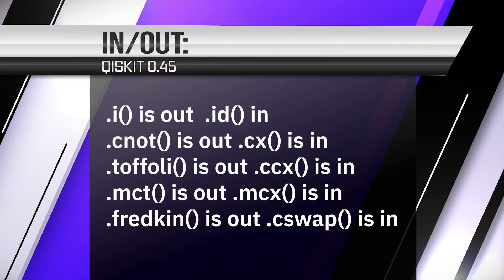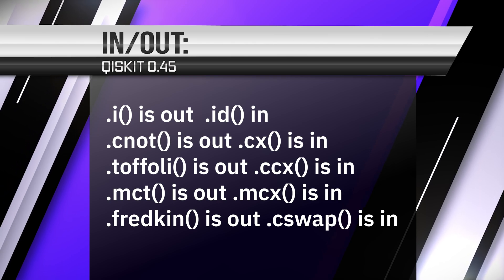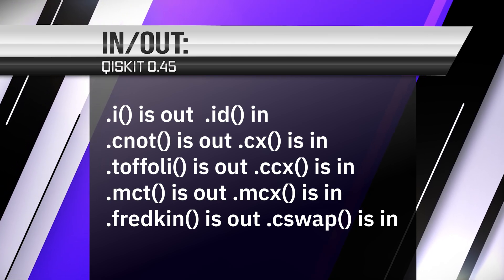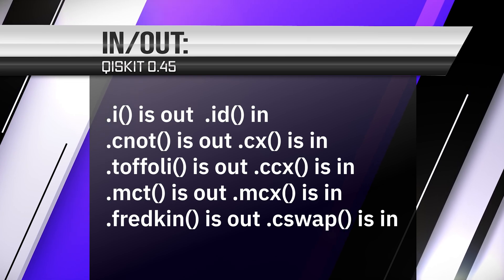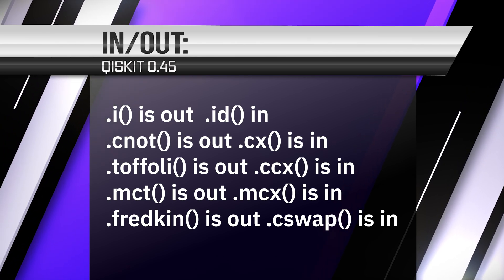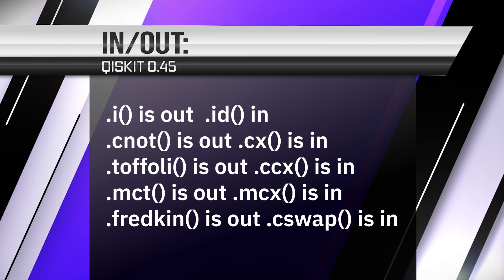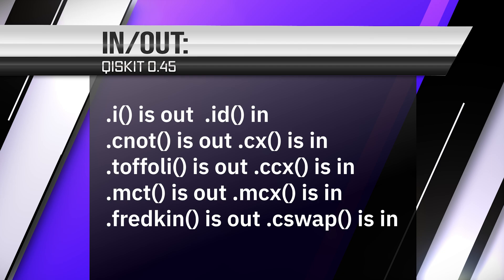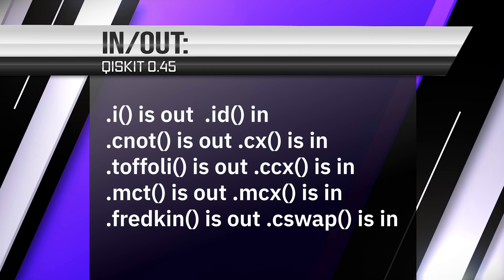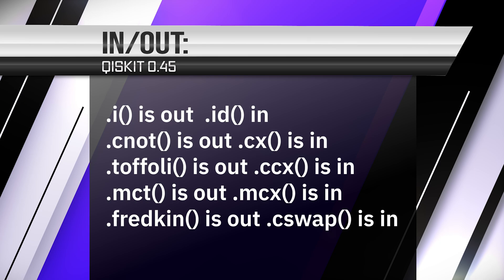Duplicated circuit gate methods are also deprecated to preserve a unique mapping between gate and method. .i is now .id for identity. .c0 is out, .cx is in. .toffoli is out, .ccx is in for controlled-controlled-not. .mct is out, .mcx is in. .fredkin is out, .cswap is in.